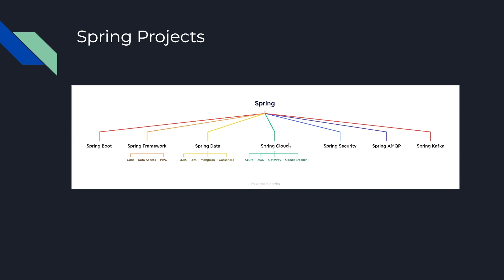Spring Cloud is used when dealing with cloud development. Spring Cloud supports Azure and AWS; we can create a gateway using Spring Cloud, circuit breaker is another feature, and tracing can also be done using Spring Cloud. Spring Security is another project — if we are creating an application and want to implement OAuth in that web application, we can do that using Spring Security.